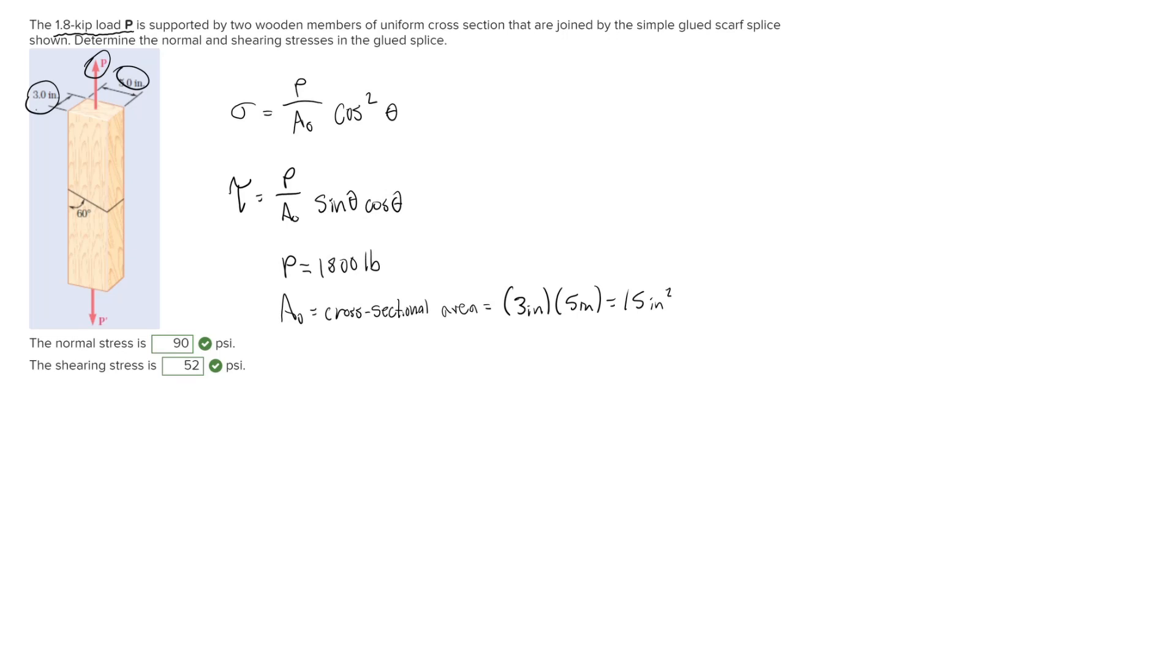F is always going to be normal to the splice or the oblique plane. I'm going to go ahead and draw that on here with our 90 degree angle—this is going to be F.